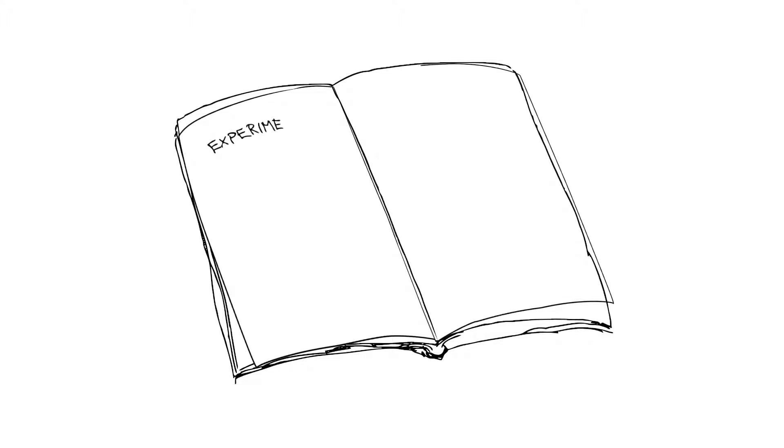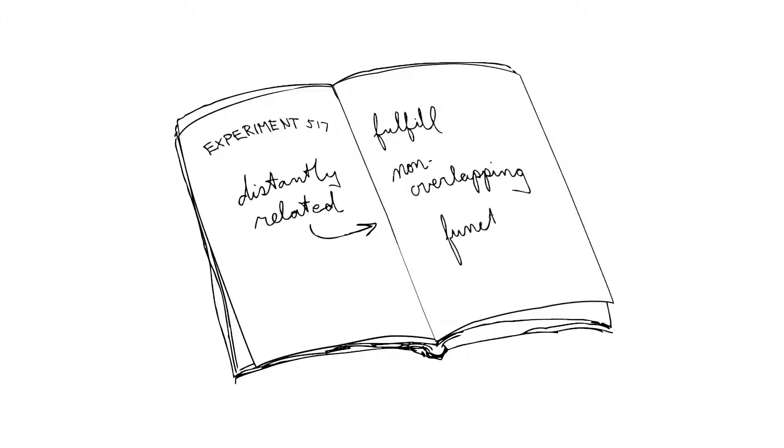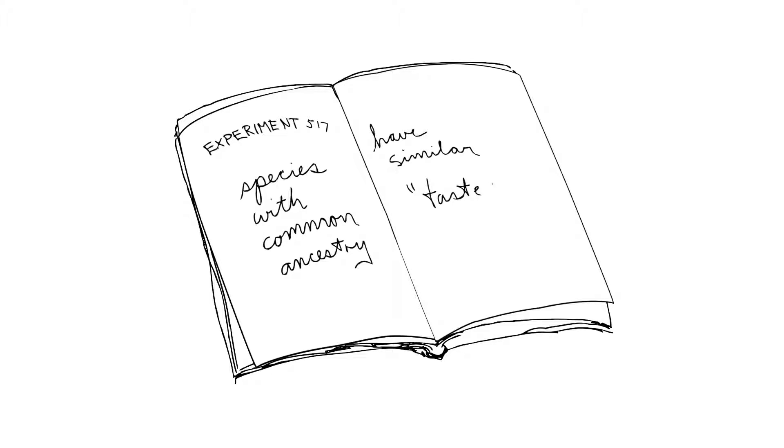And as it turns out, recent carefully controlled experiments have shown that ecosystems made up of more distantly related species result in greater biomass. The reason for this is that distantly related organisms are more likely to fulfill functions in different non-overlapping niches. In other words, they're not competing with closely related species that, because of their common ancestry, have similar tastes or needs for resources in the ecosystem.